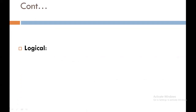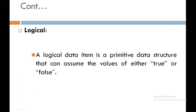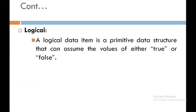The next type is logical. It is a primitive data structure that can assume mainly two values: either true or false. It is just like a boolean data type.